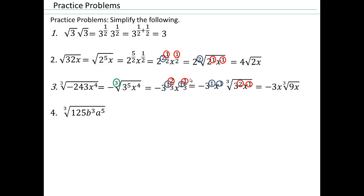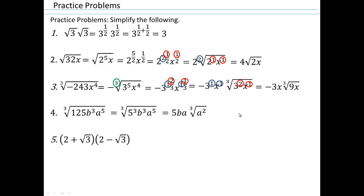Try that one on your own. How we got that: 5 to the three-thirds — that'll be 5 to the 1. b to the three-thirds, that's b to the 1. a to the fifth, so cube root of a to the fifth — that's a to the five-thirds, which is 1 and two-thirds. So a to the 1, and a to the two-thirds is this radical right here.